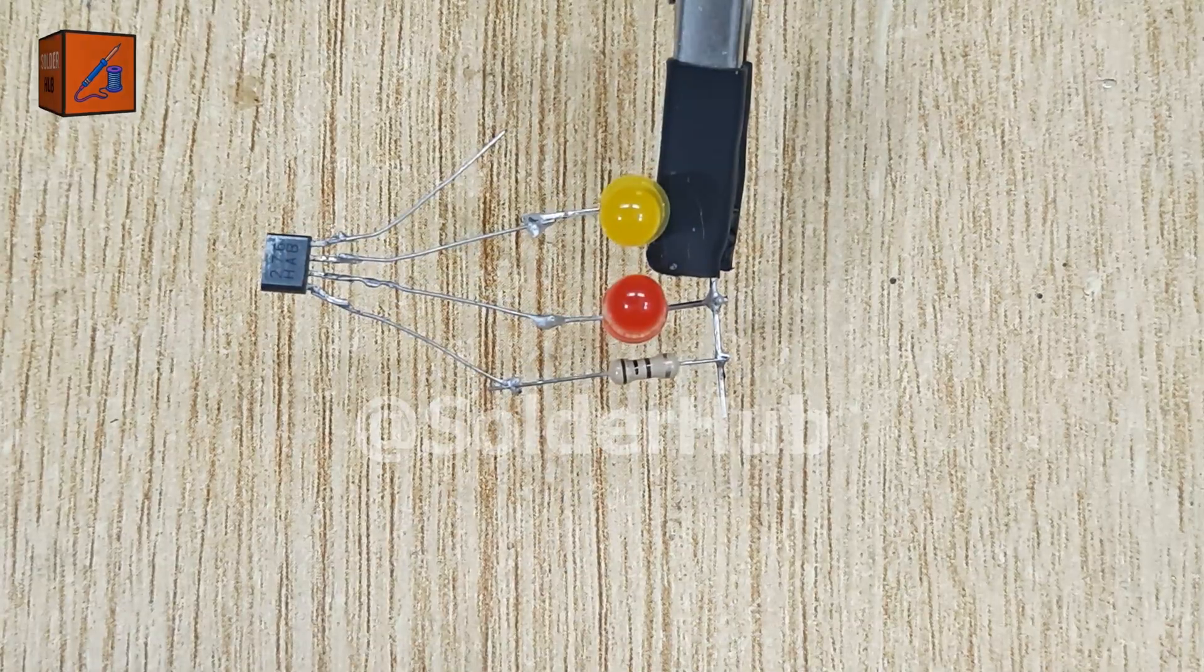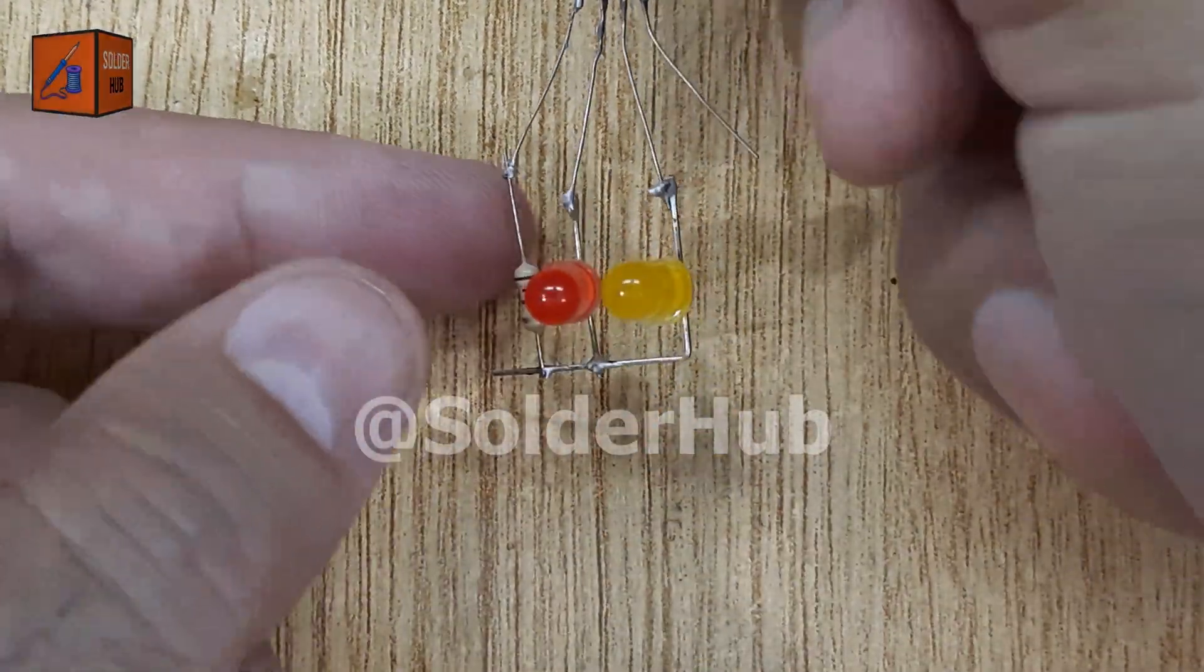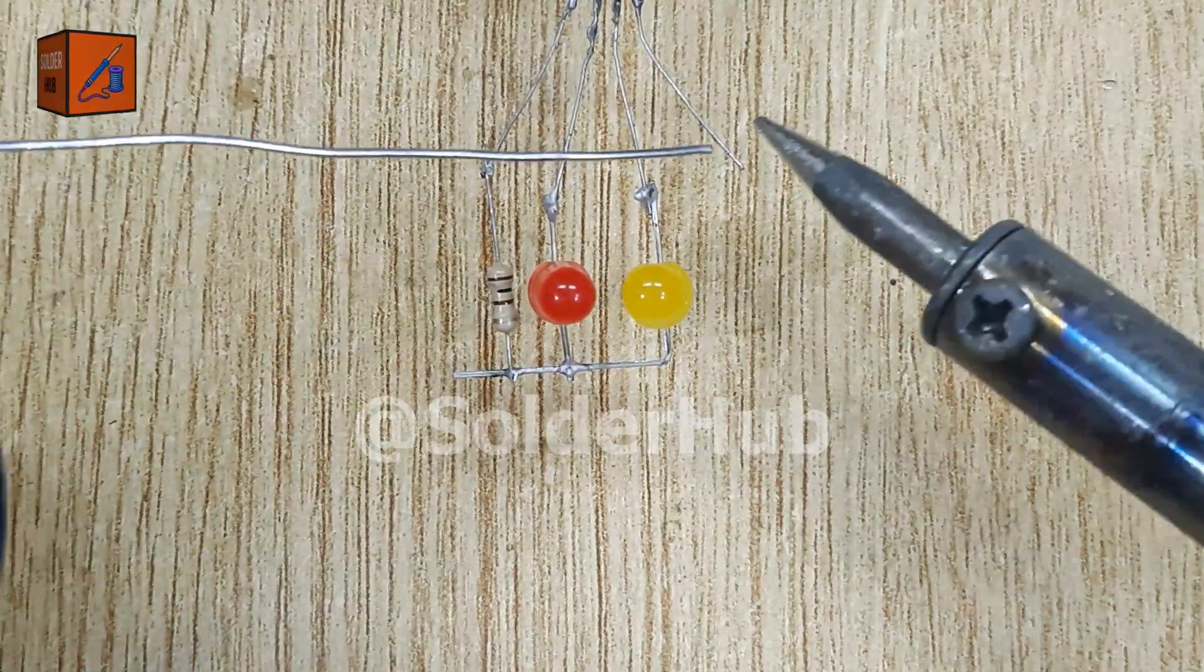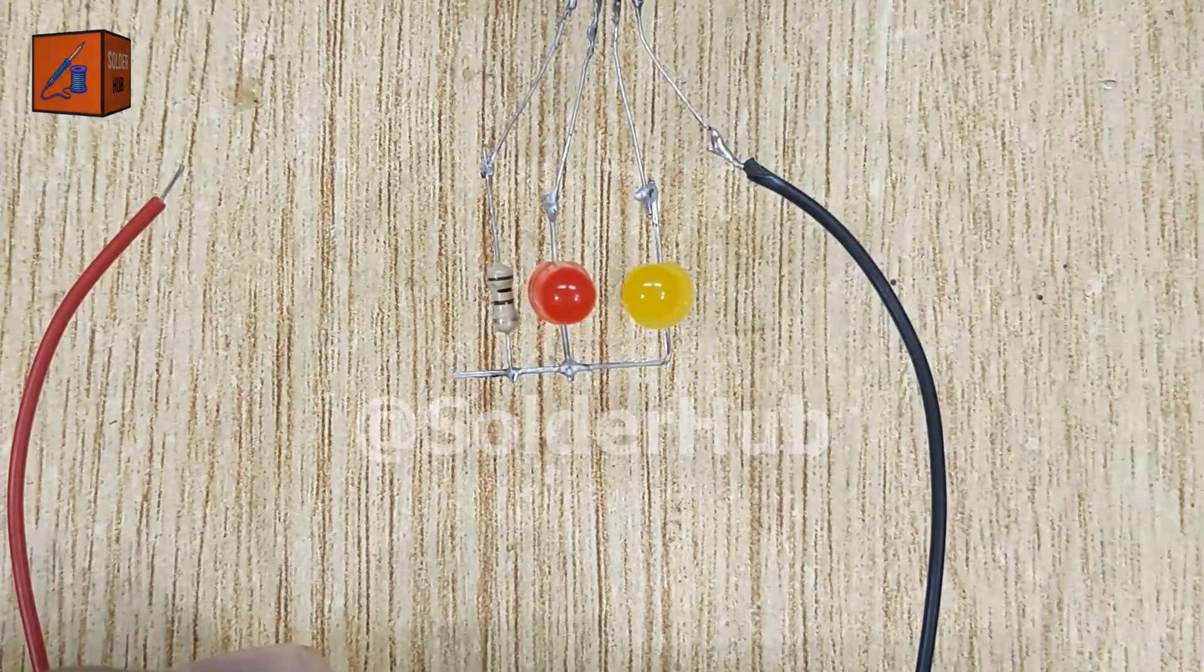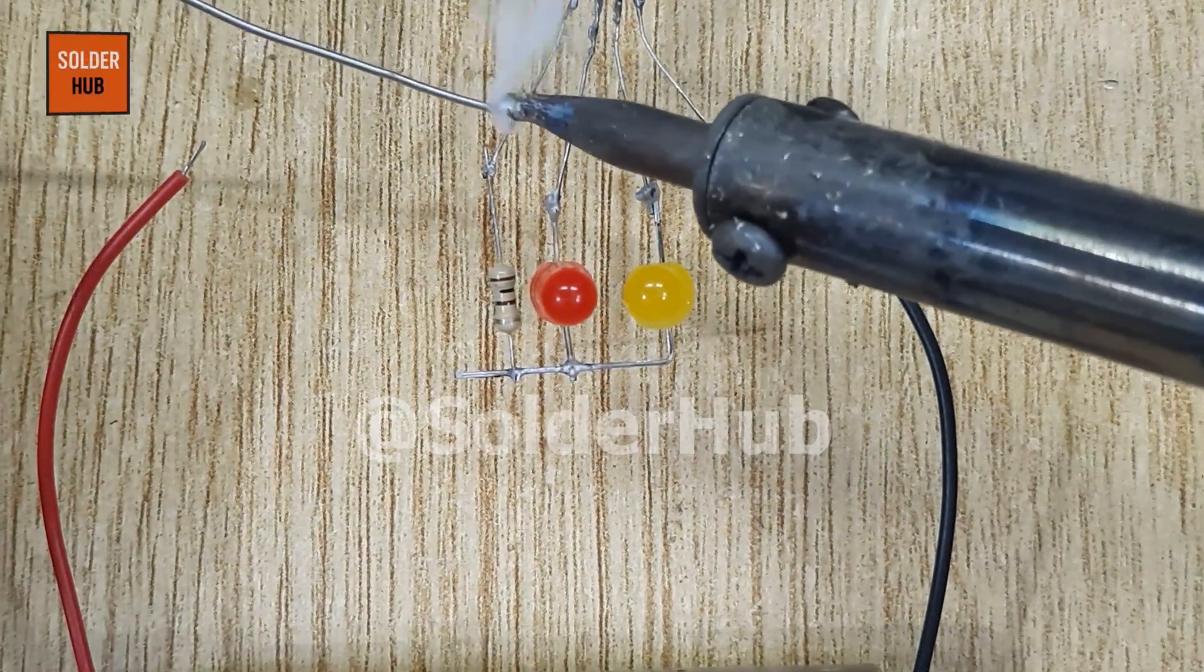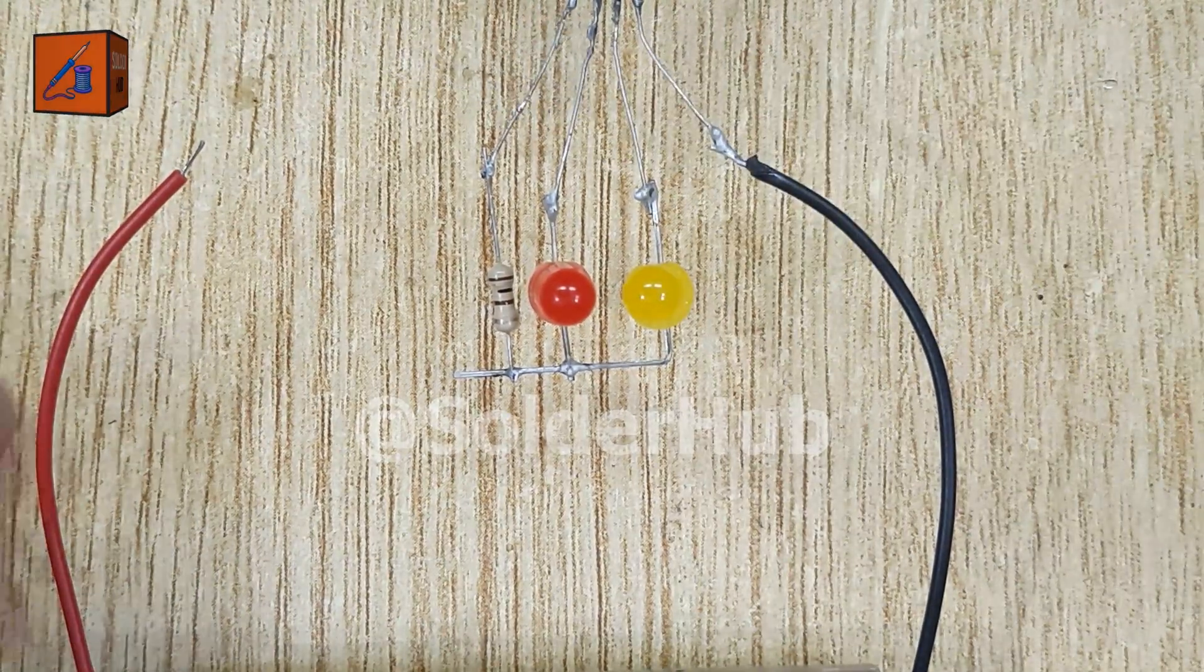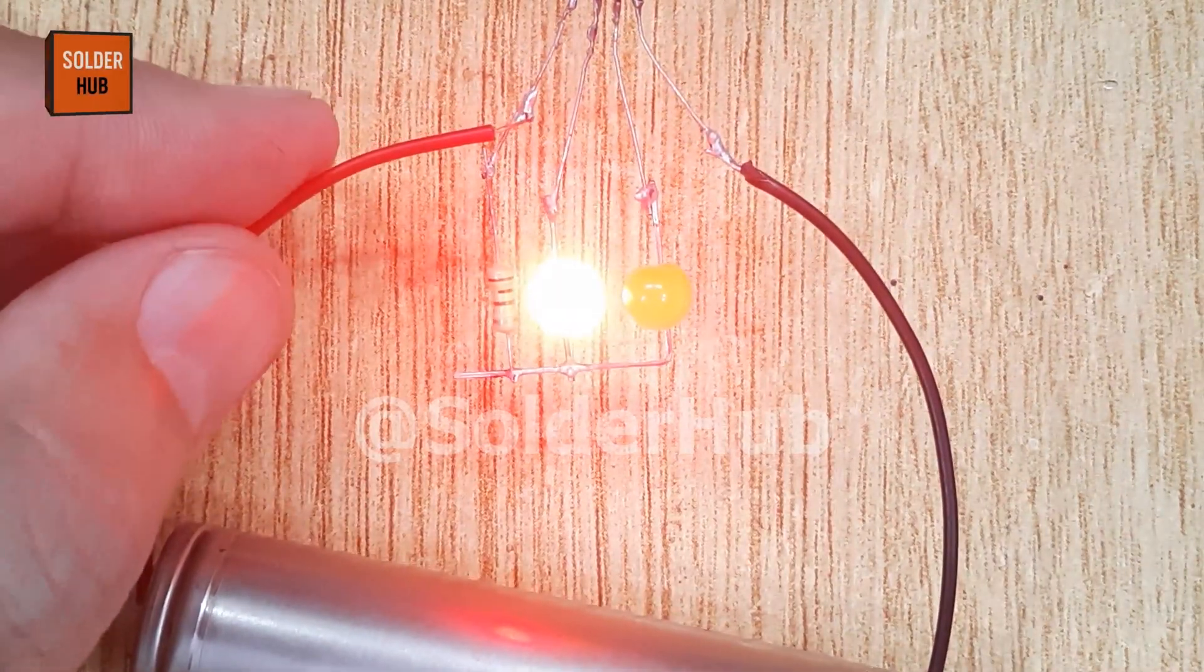Now it's time to connect the power source. I'm using a 3.7 volt rechargeable battery which is perfect for powering LEDs and small sensors. I solder the negative wire of the battery to the fourth pin, ground of the hall effect sensor, and the positive wire to the first pin, VCC of the sensor. As soon as the connection is made the red LED glows steadily showing that the circuit is powered and ready.